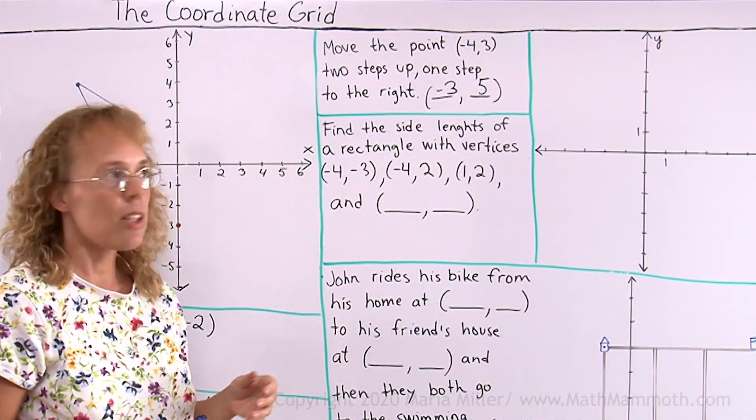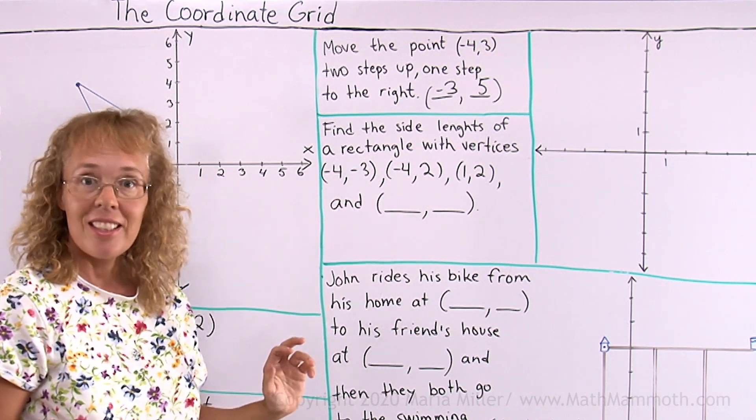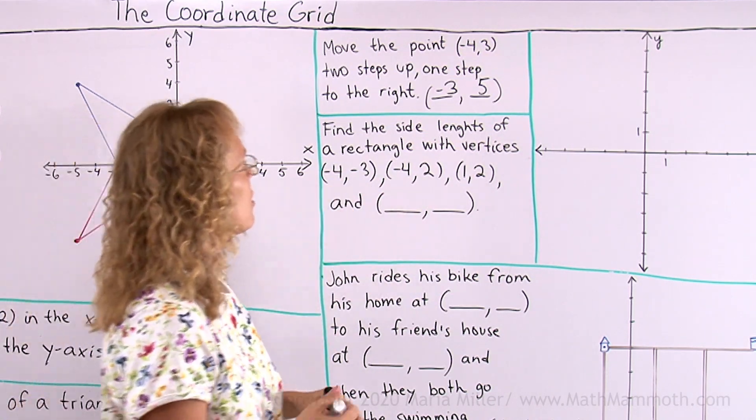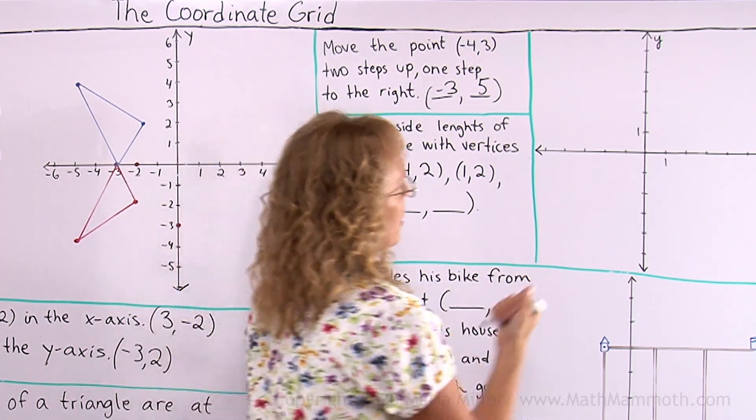Find the side lengths of a rectangle with vertices that are given here and one vertex is not given. Let us first draw the rectangle.